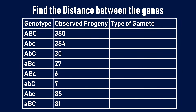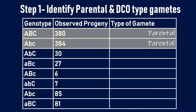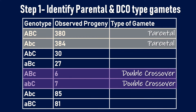Let's look at this question where we need to find the distance between the genes, and we are provided with the genotype and the number of observed progenies. To solve this, we must know the type of the gametes. So our first step is to find the parental and the double crossover type. The highest number of progenies are the parental type and the lowest number of progenies are from the double crossovers.